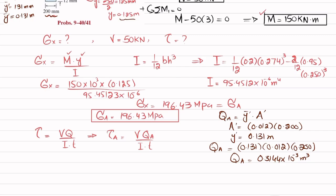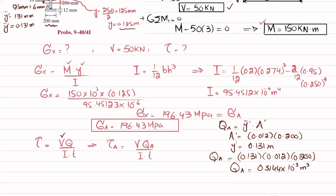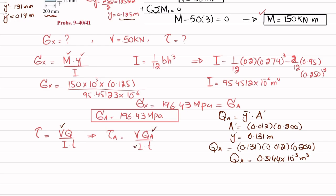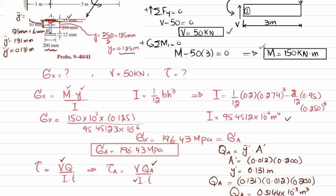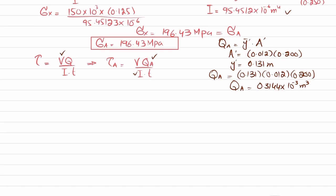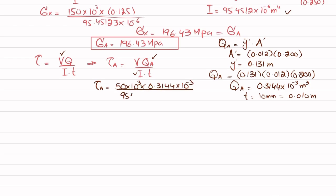We now have all values: V = 50 kN = 50 × 10³ N, Q_A = 0.3144 × 10⁻³ m³, I = 95.4512 × 10⁻⁶ m⁴, and the web thickness at point A is t = 10 mm = 0.010 m. Substituting into tau_A = VQ / (It) gives a shear stress at point A of 16.47 MPa.